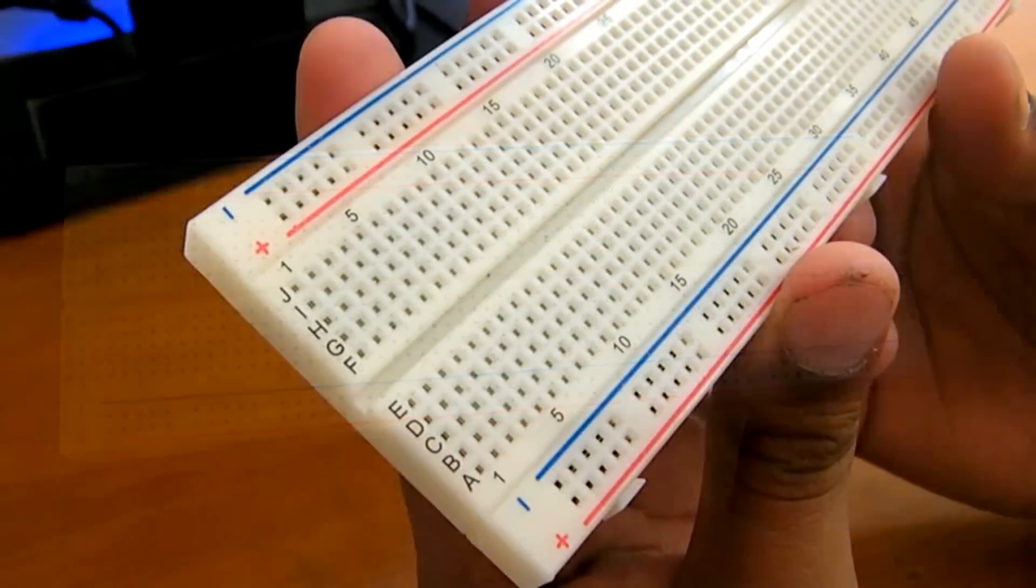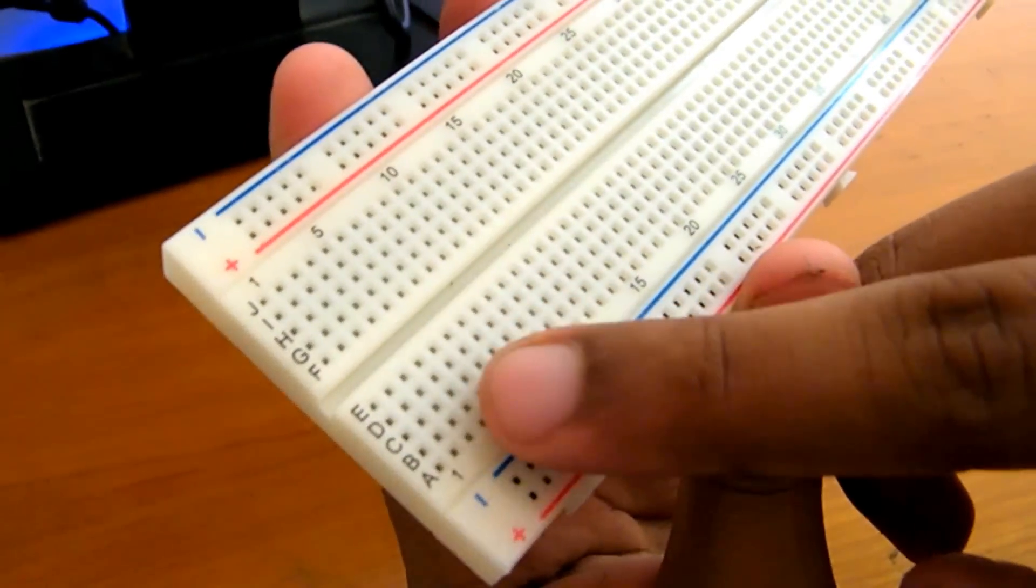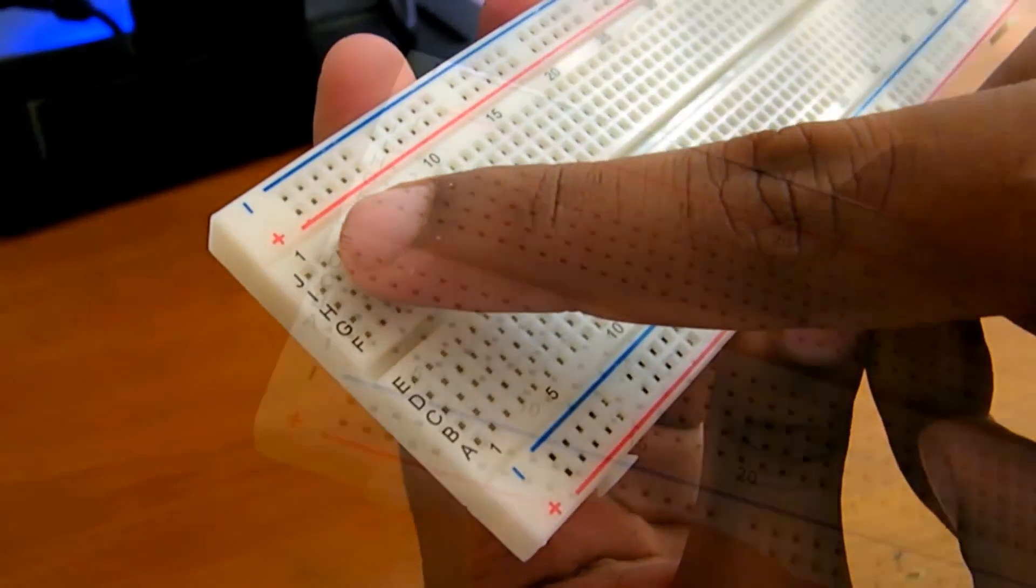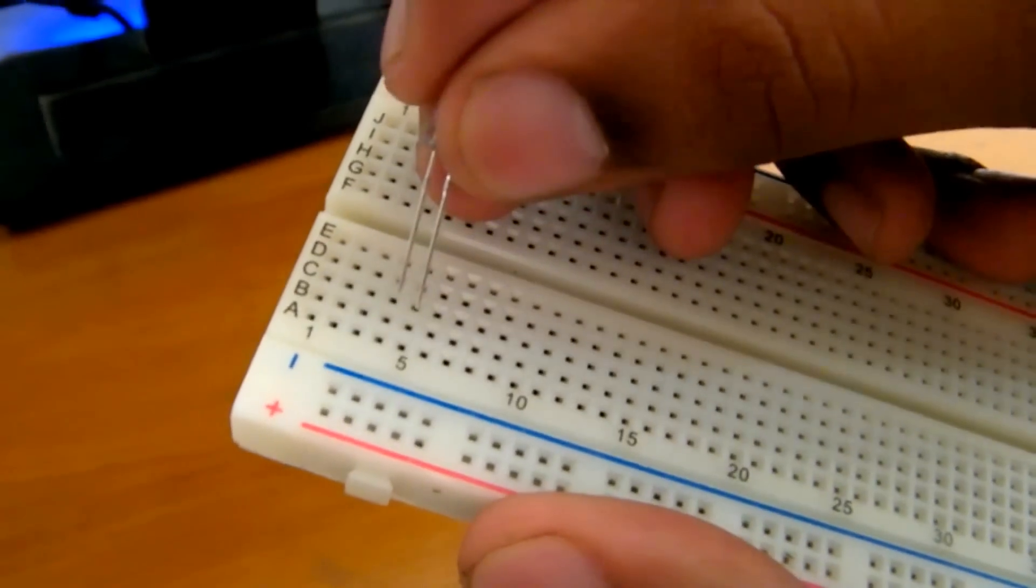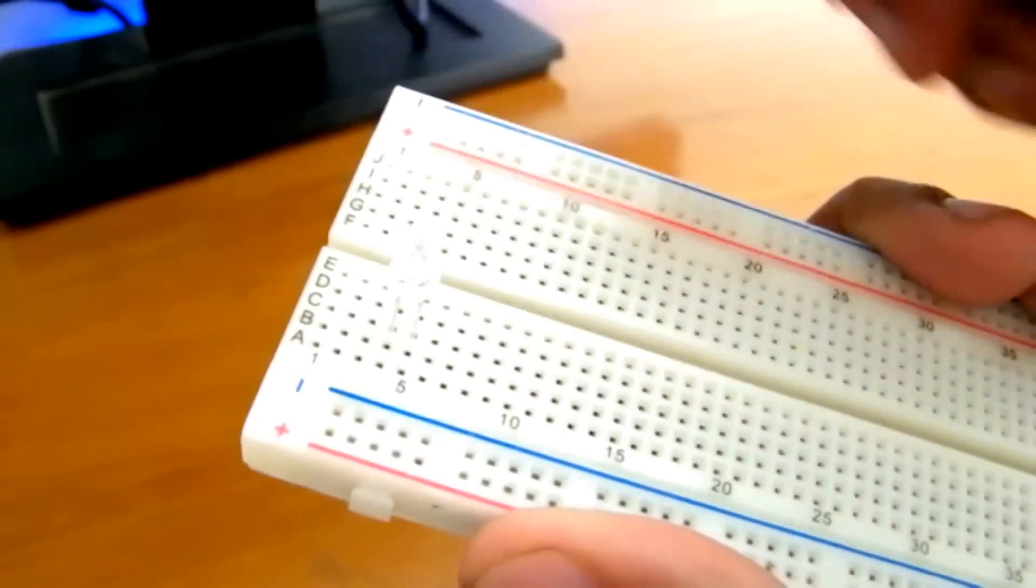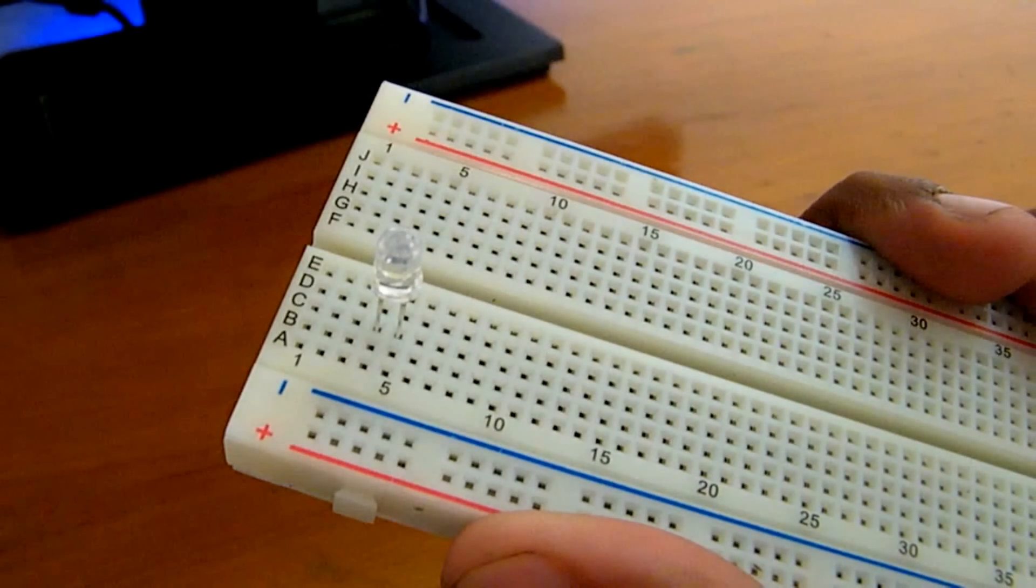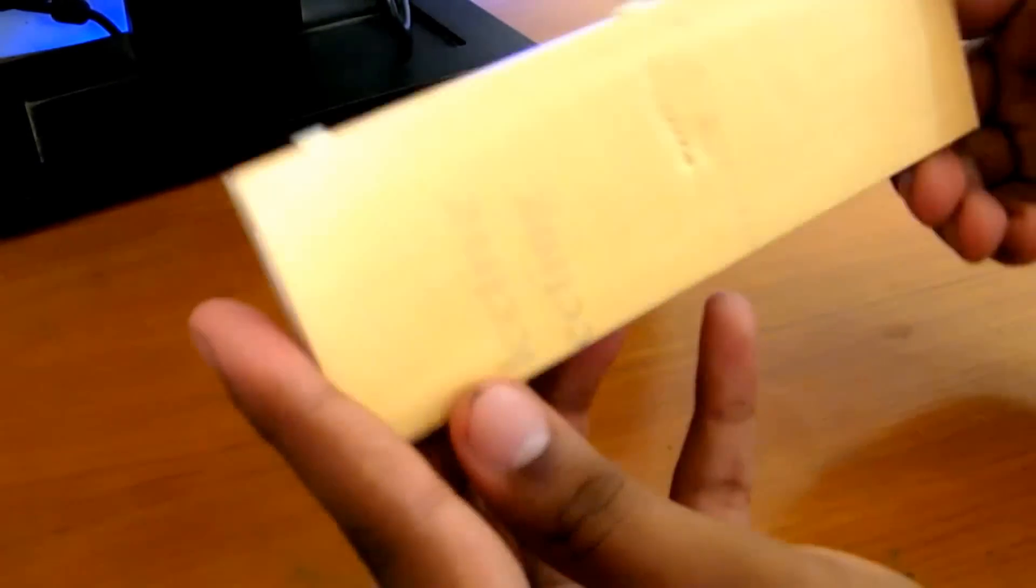This breadboard is an 800-point breadboard. That is, there are 800 points or holes to put your components in. These holes are just the right size to accommodate wires, LEDs, or other components.